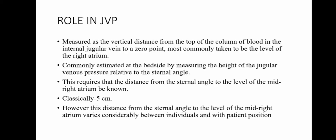One of the important components of the cardiology examination in clinical medicine is the measurement of the JVP. The JVP is measured as the vertical distance from the top of the column of blood in the internal jugular vein to a zero point, which is most commonly taken to be the level of the right atrium. The JVP indirectly gives the pressure in the right atrium. The measurement of the JVP at the bedside is by measuring the height of the jugular venous pressure relative to the sternal angle.